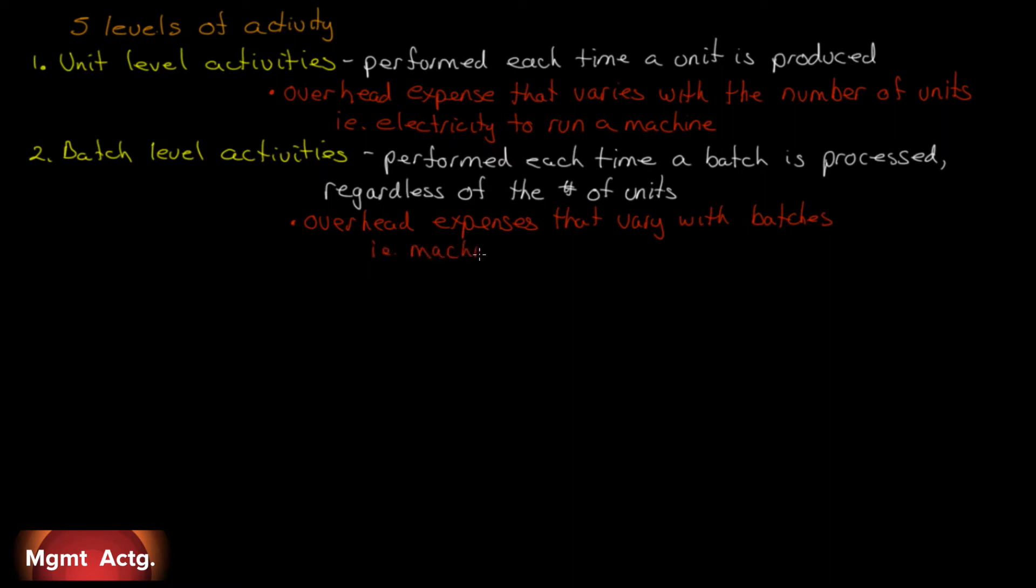We can move up one level higher. The next level would be product level costs. And we can start thinking, pretty much we know what unit level and batch level is. So product level must be costs related to specific products, regardless of how many batches are made and regardless of how many units are in each batch. Costs that are related to the specific product. The product is the cause of the cost, not the batches or the units.